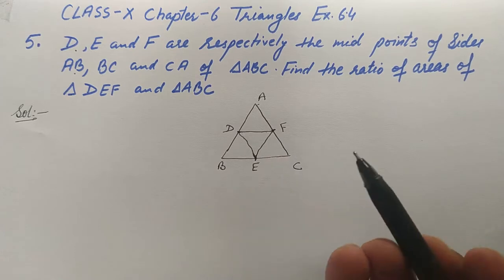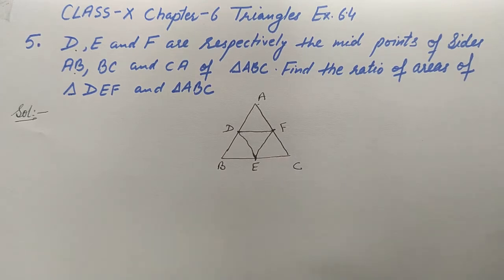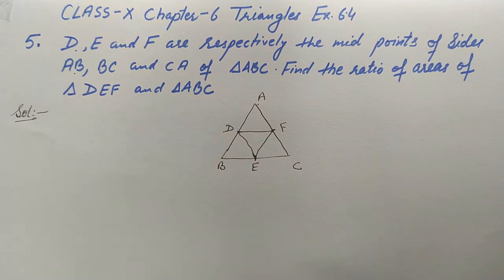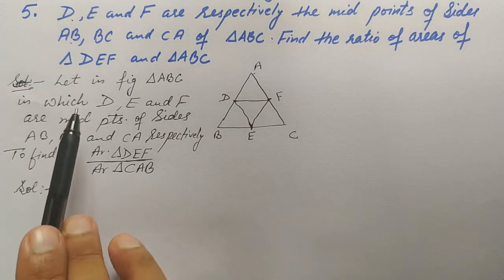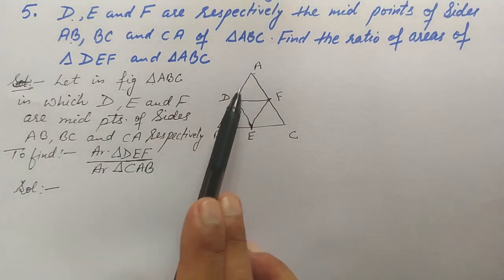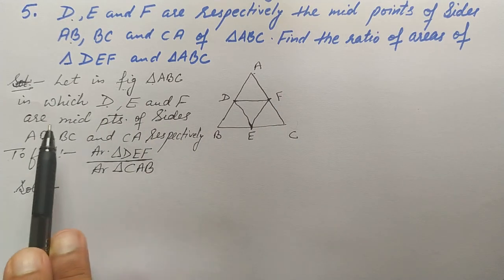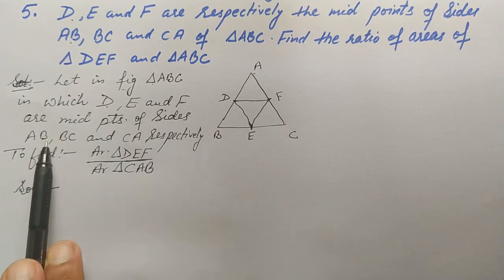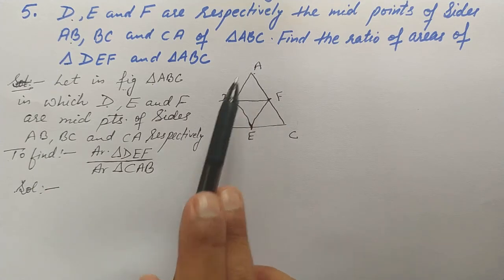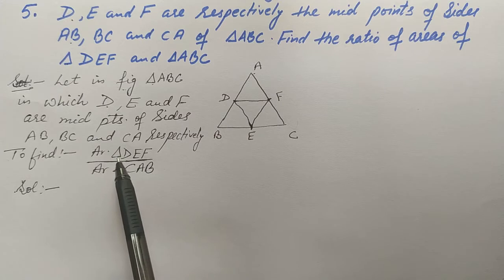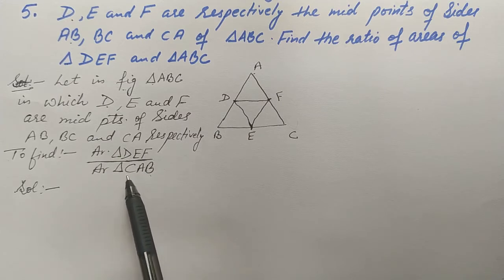Let's start the question. First, we'll write what is given: in triangle ABC, D, E, and F are midpoints of sides AB, BC, and CA respectively. We need to find the area of triangle DEF over the area of triangle ABC (also written as CAB).